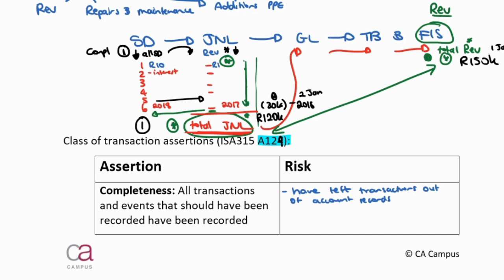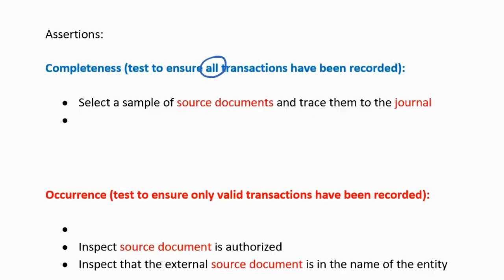Have all the source documents that should be recorded been recorded in the journal? So you select your sample from the source documents and you trace it to the journal. You need to be specific here — what source document, what journal. Let me give you a couple of examples.